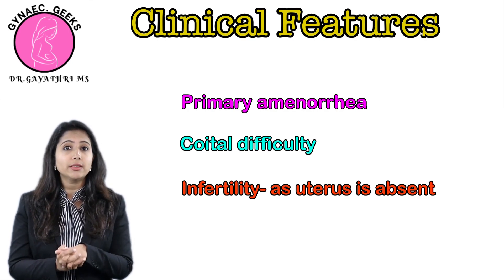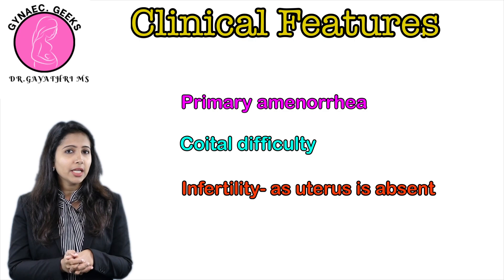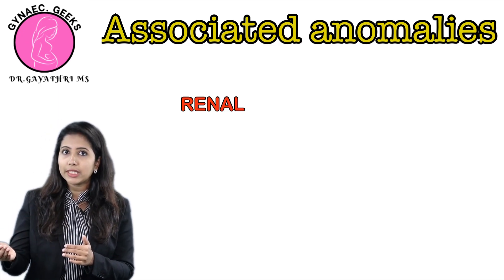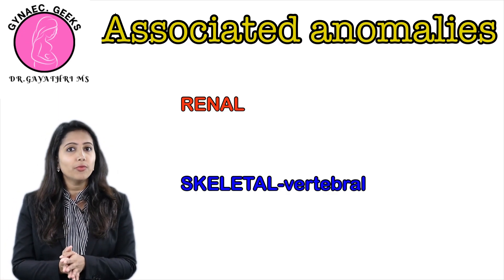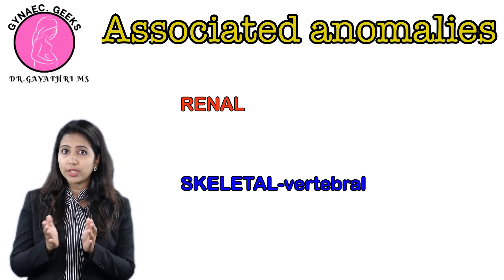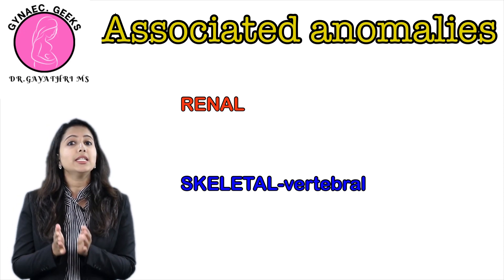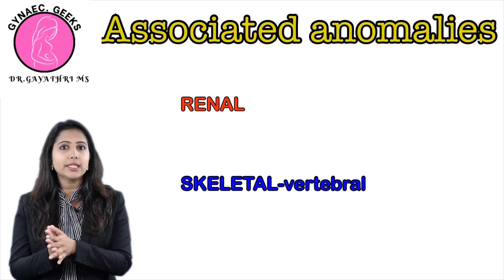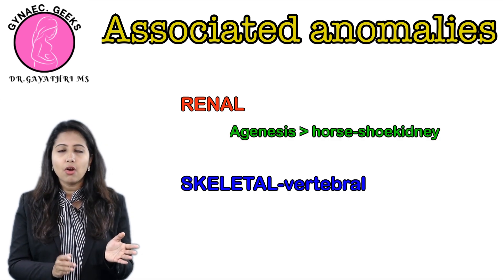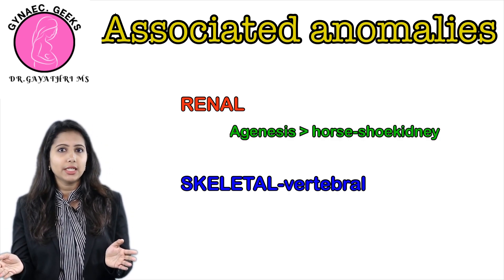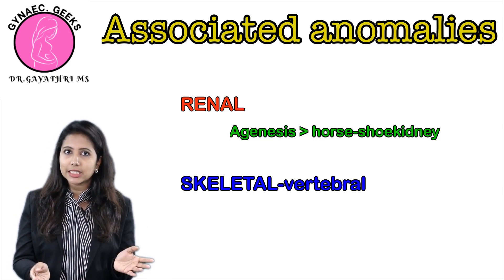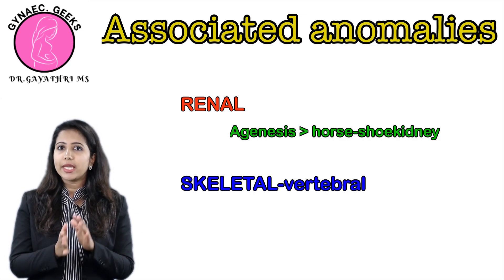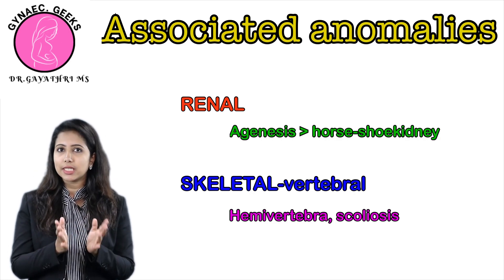The investigation we have to do in this woman is MRI. These anomalies can be associated with other anomalies — there could be renal anomalies and problems in the development of the vertebra. As the mesonephric duct and paramesonephric duct are closely related, and the mesonephric duct leads to the development of the kidneys, there could be problems in kidney development. The most common renal anomaly is agenesis followed by horseshoe-shaped kidney. There could also be skeletal anomalies such as hemivertebrae or scoliosis.